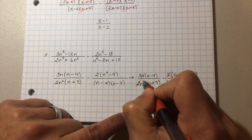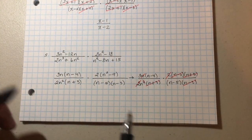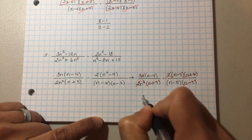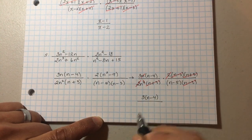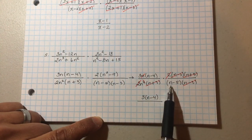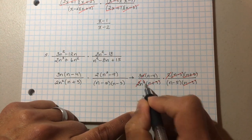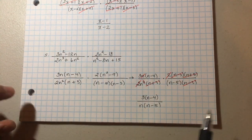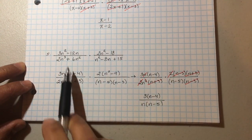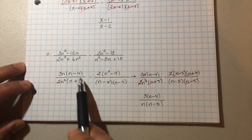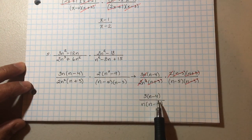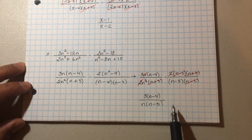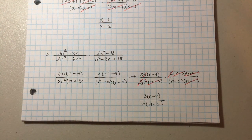Now let's cancel: n plus three over n plus three cancels. n minus three over n minus three cancels. The two's cancel. One of the n's cancels as well. So on the numerator you're left with three times n minus four. On the denominator, be careful — you still have one n left, and then n minus five. So the final answer is 3(n minus four) over n(n minus five). Remember: always factor everything before you start canceling.